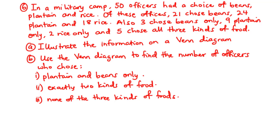Part A: Illustrate the information on a Venn diagram. Part B: Use the Venn diagram to find the number of officers who chose: I. Plantain and beans only. II. Exactly 2 kinds of food. III. None of the 3 kinds of food.